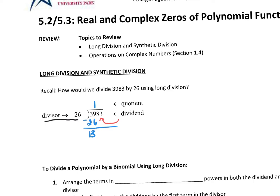We bring these numbers down. We bring down the 8, and we say how many times will 26 go into 138? 26 will go into 138 five times. So we do 5 times 26, which is equal to 130.